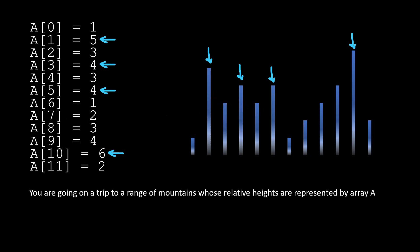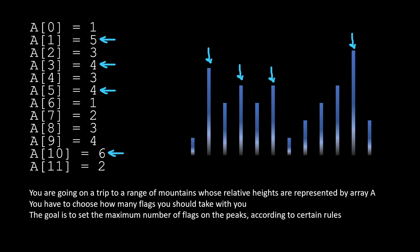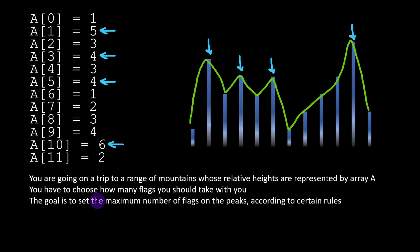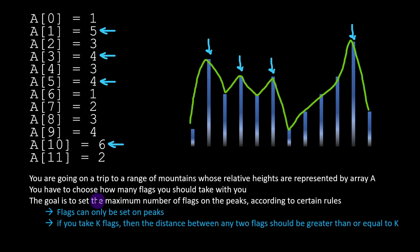Setting flags follows a certain number of rules. First, we have to choose how many flags we are carrying through our trip — you have to know in advance, and this will be the limit of how many flags you can put on peaks. The ultimate goal is to set the maximum number of flags on the peaks. We can set flags only on peaks, and if you take k flags, the distance between any two flags should be greater or equal to k.